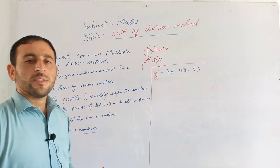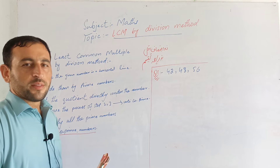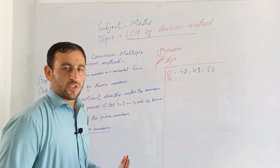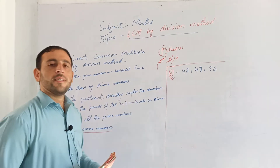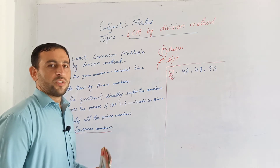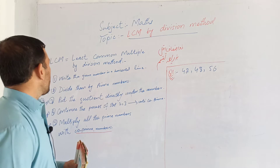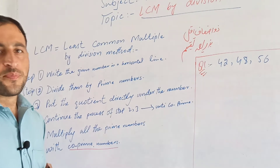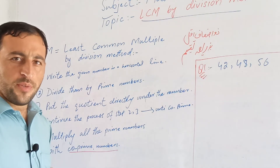If you enjoy building and study literature, you will understand this and get a lot out of it. LCM is a division method with steps. If you follow the steps, it will not be a problem. Step 1 is to write the given numbers in a horizontal line. You can see that LCM is a division method.